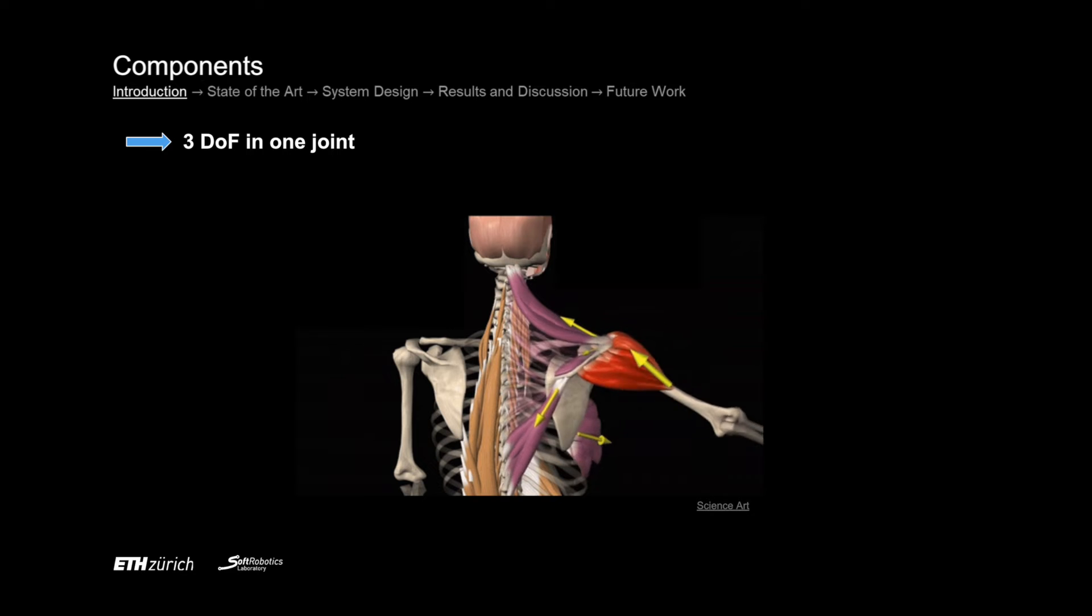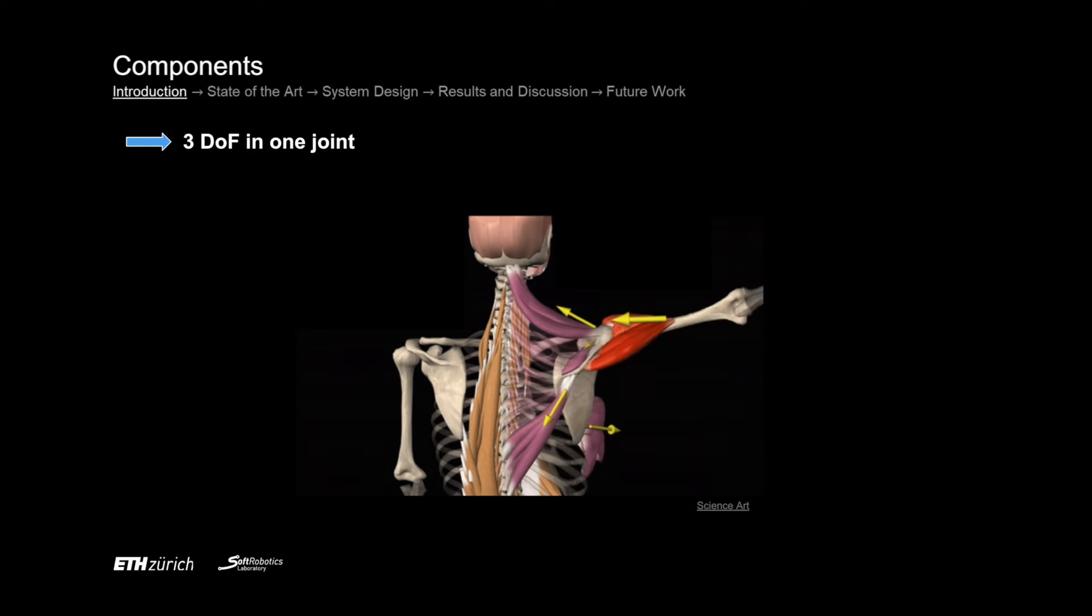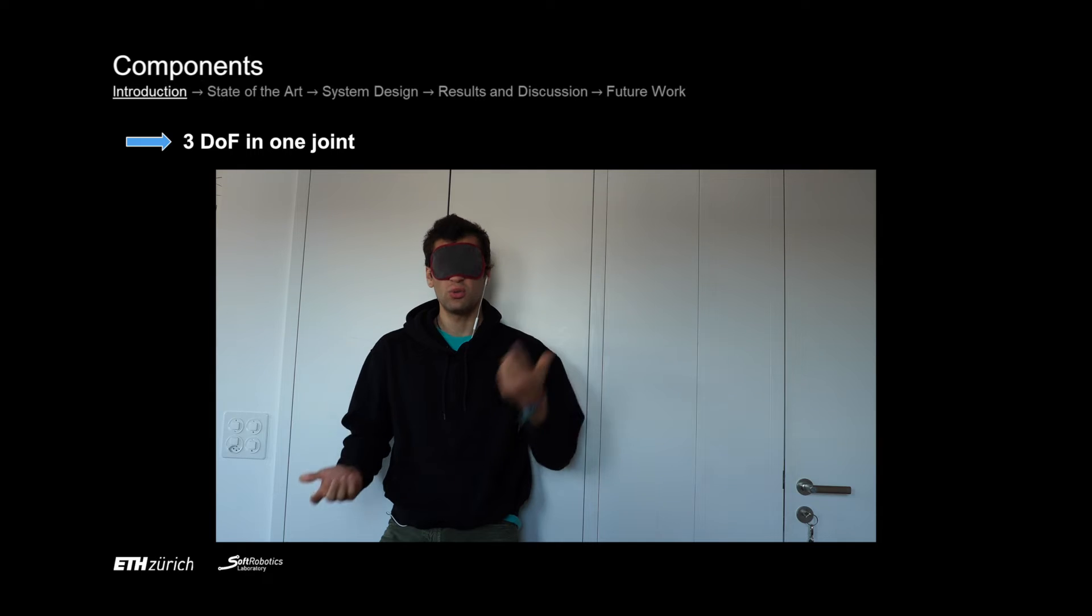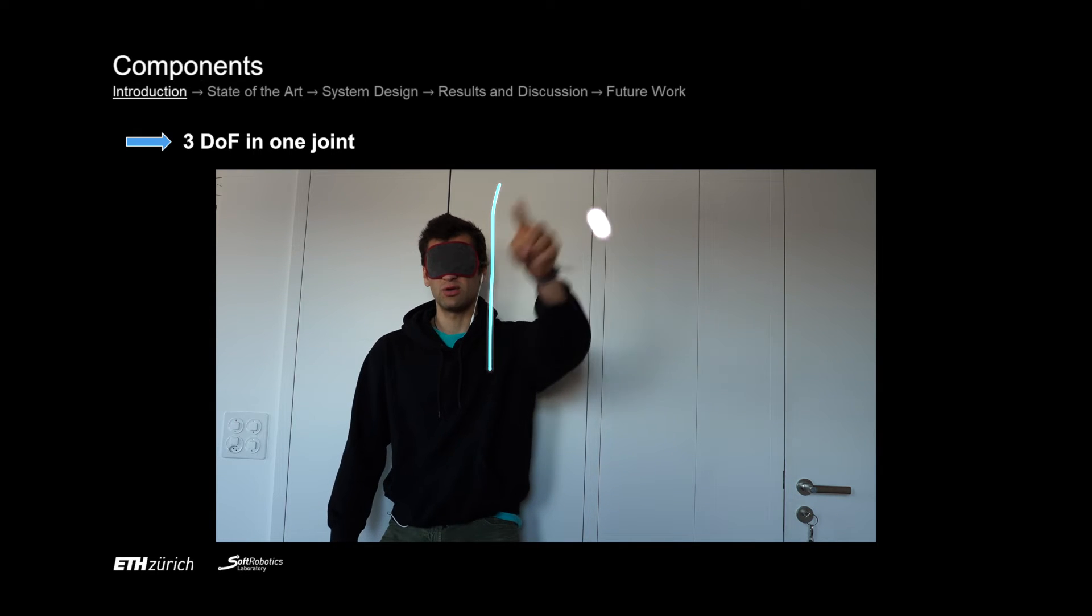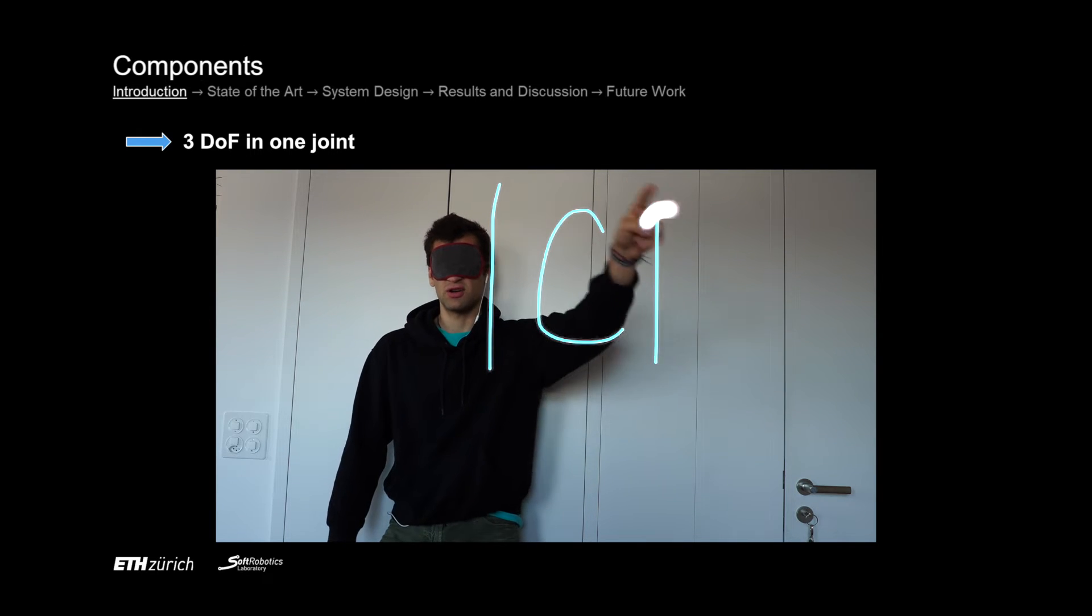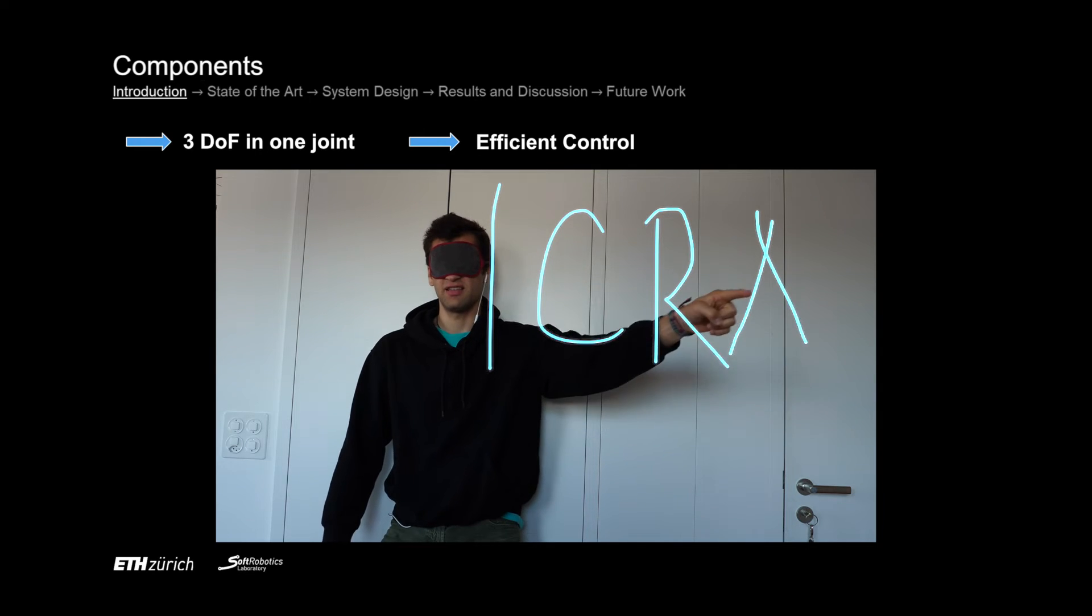The joint is controlled by soft muscles that have proprioceptive feedback, meaning we as humans know where our arm is without even looking at it, which lets us control our arm very efficiently without any external sensors.